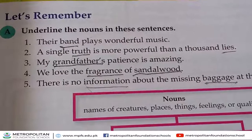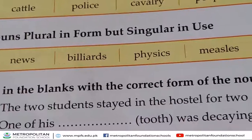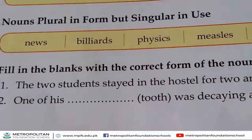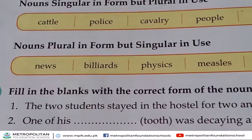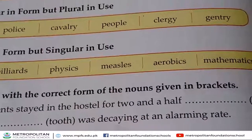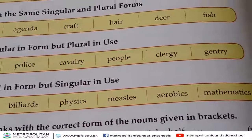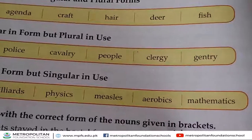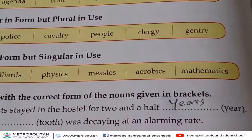Now let's move on to the other exercise. Exercise D: fill in the blanks with the correct form of the nouns given in brackets. The first one: 'The two students stay in their hostel for two and a half ___.' The bracket word is 'year', so we have to make it into noun form. We are going to write 'years'.